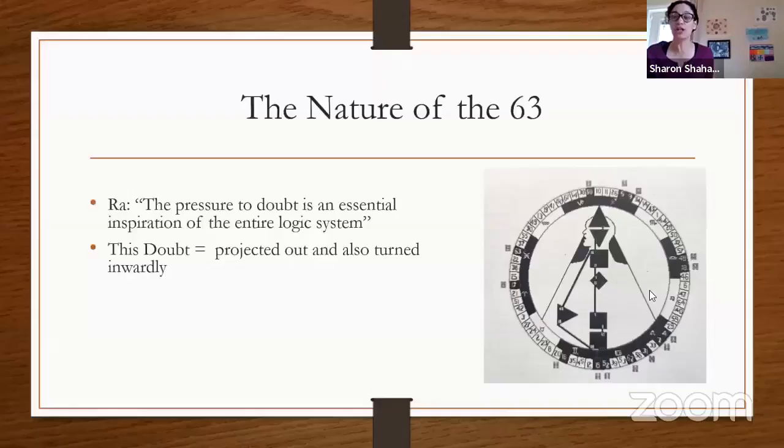Just a few examples: if your spleen is open and you have the 63; if your G or ego is open and you have the 63 — these are formulas you can use for your own chart, looking at these things.